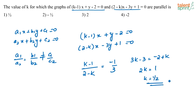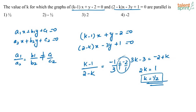So the value of K when these two lines are parallel is K equal to 1 by 2. You can verify these two lines are indeed parallel when K is equal to 1 by 2. The correct answer is option 1.